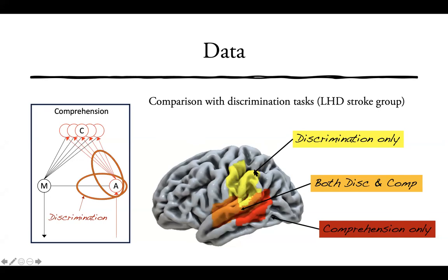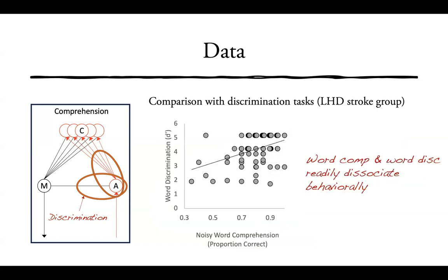We can get dissociations where a patient with a deficit on discrimination may have damage to just the dorsal regions and still comprehend speech perfectly fine. This scatter plot shows noisy word comprehension proportion correct versus word discrimination using d-prime, and you can see that while there's a weak relationship, these measures are basically uncorrelated and dissociations occur readily.